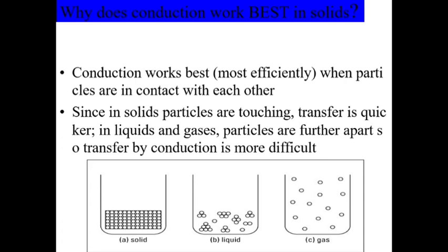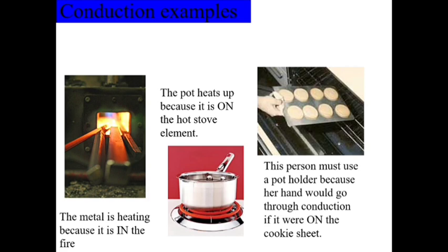In this example, the metal is heating because it is in fire. The pot heats up because it is on the hot stove element. As you can see, this person must use a pot holder because her hand would go through conduction if it is on the cookie sheet.